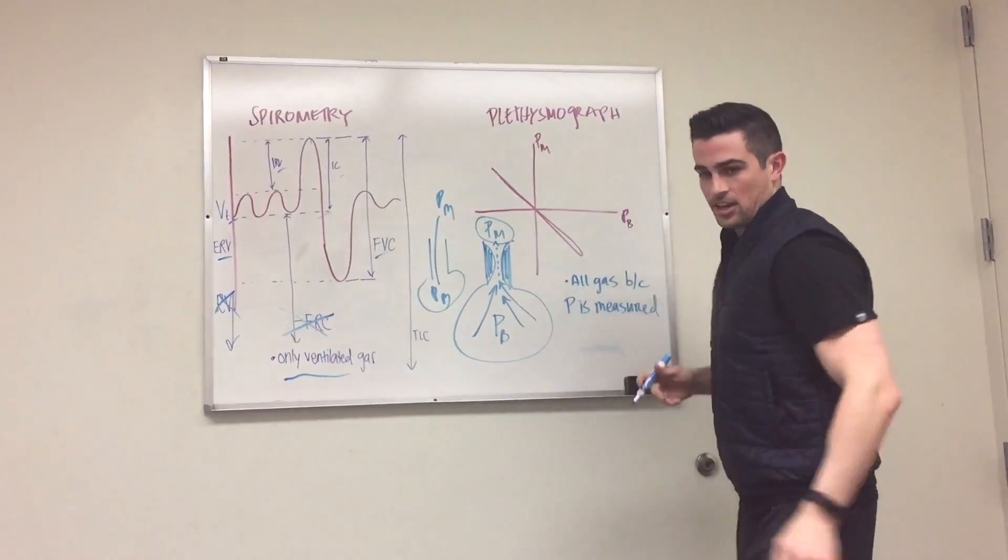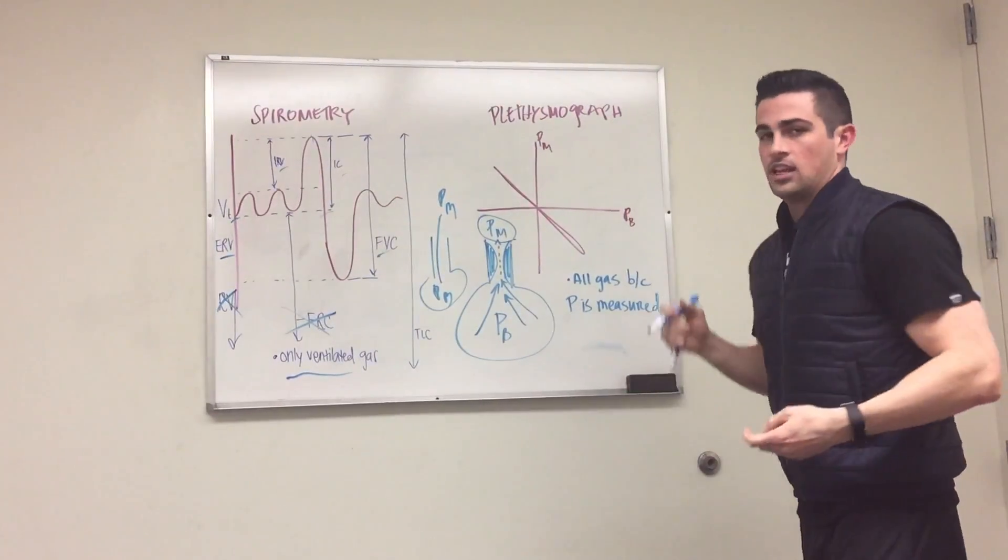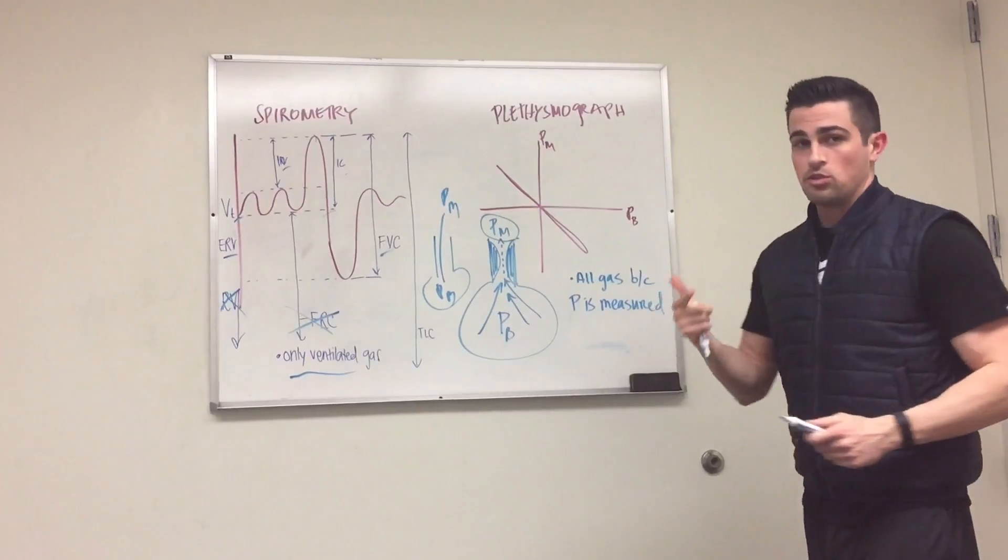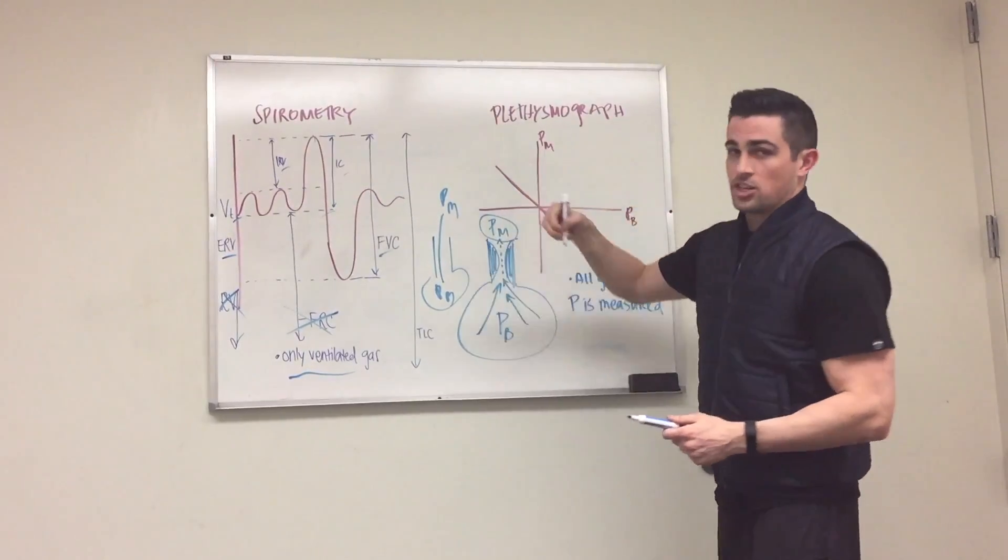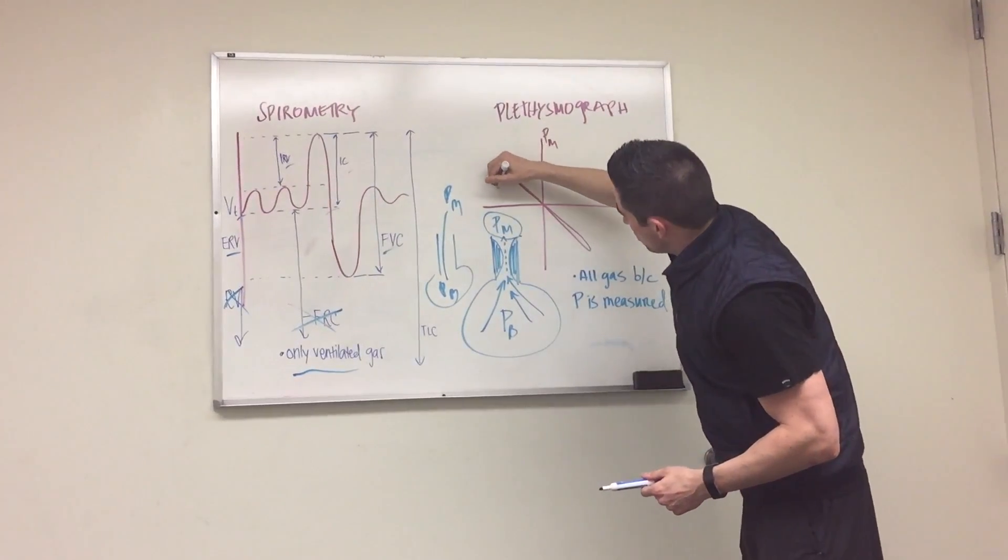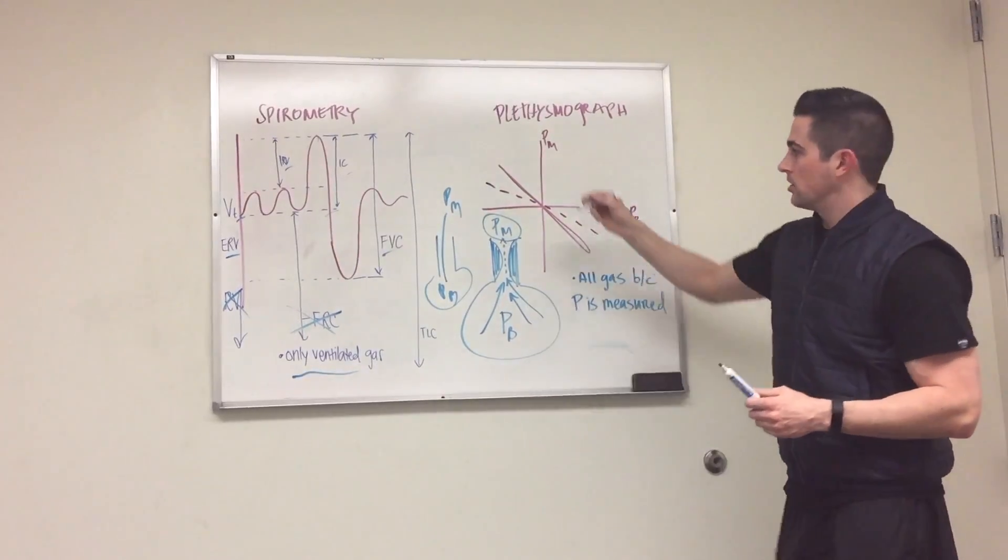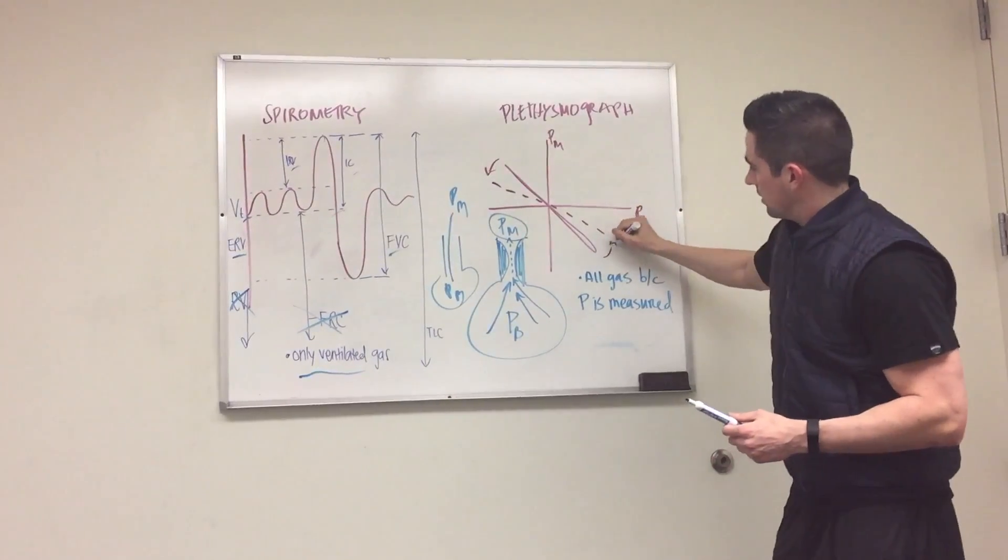When we're looking at this, if you have larger lungs or if you have increased resistance, the line is going to have a decreased slope. So the line will actually look like this. That's an important factor. This line is going to shift like this.